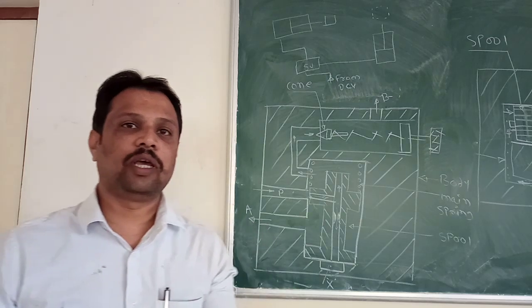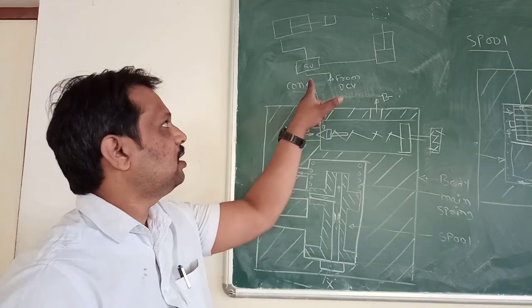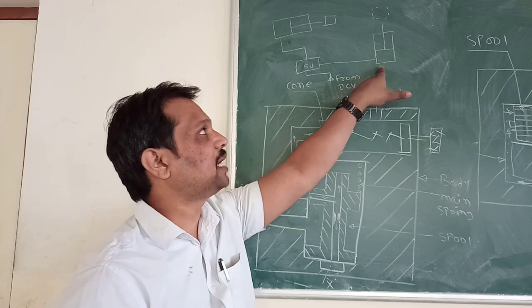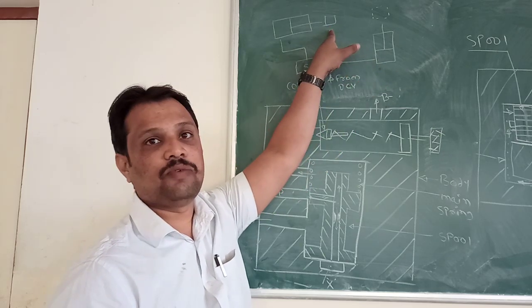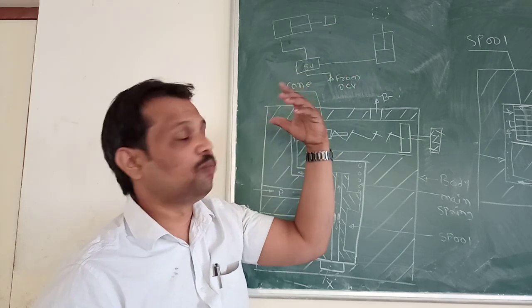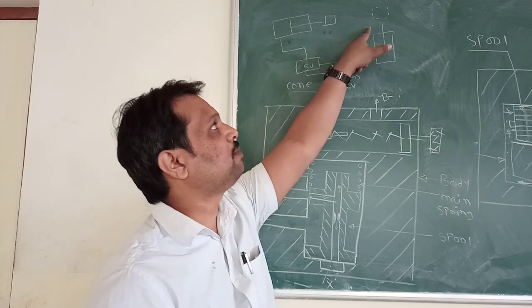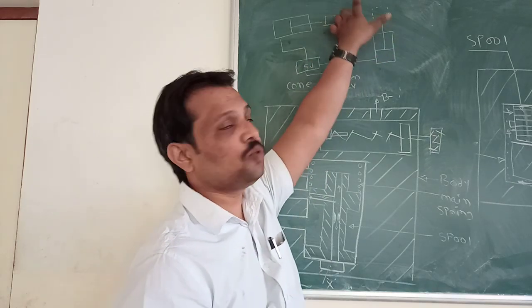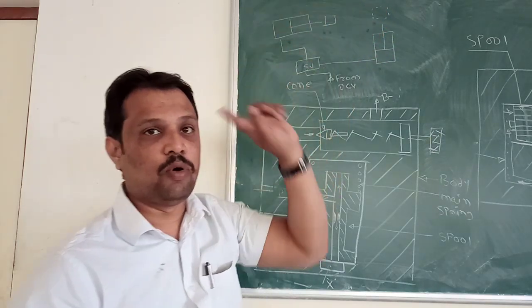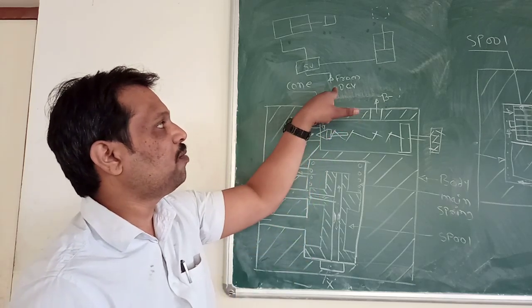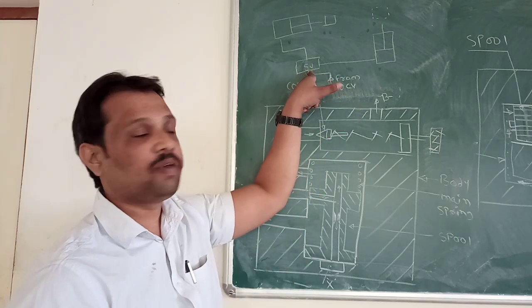Before this, I will give you one example. This is the first actuator and this is the second actuator. This is my workpiece, which I have to move from this place to this place, and again from this place to above. So first, oil will come from the DCV valve to the sequence valve.